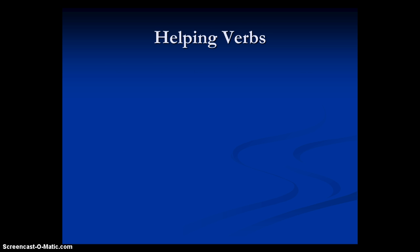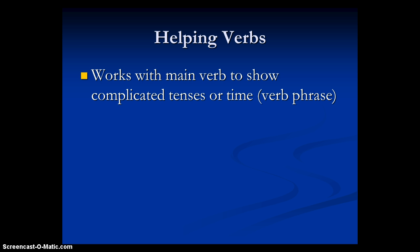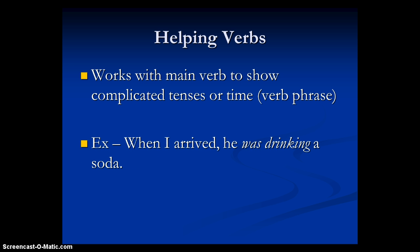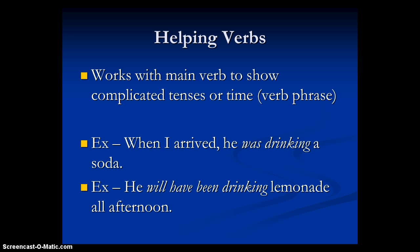Then we move on to helping verbs — the third type. What they do is work with the main verb in the sentence to show complicated tenses or time. When helping verbs go with the main verb, both together are called the verb phrase. An example: when I arrived, he was drinking a soda. 'Was drinking' is the verb phrase — 'was' is the helping verb and 'drinking' is the action verb. If asked on a test to identify the verb, it would be 'was drinking.' Another example: he will have been drinking lemonade all afternoon — where 'will have been' are helping verbs along with the action verb 'drinking.'